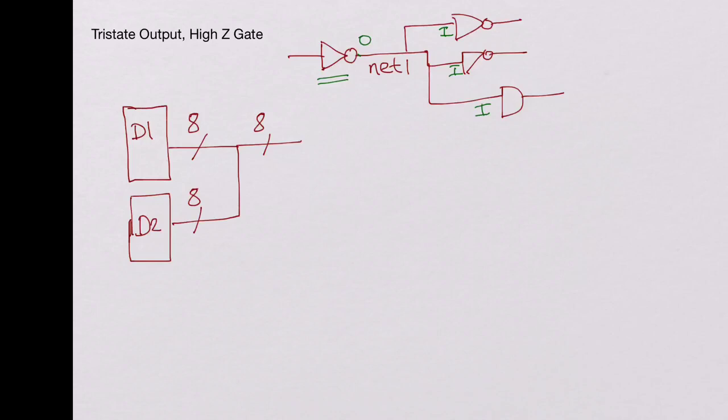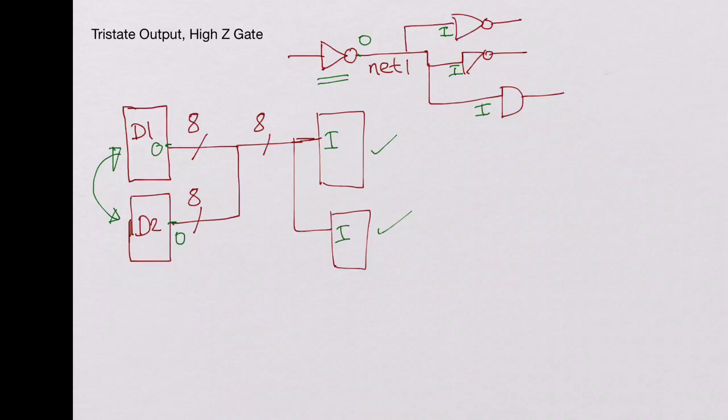It could go to other places where it's just an input. This is an output here and it could be going to another place where it is only input. So we are fine with these two but D1 and D2 could have a conflict. When D1 is driving a 0 and D2 drives a 1 we have a problem.